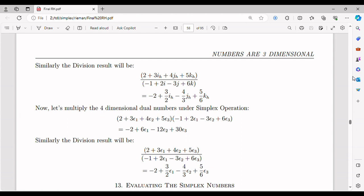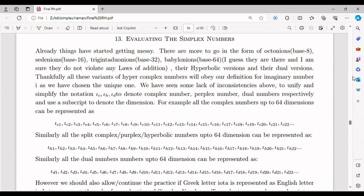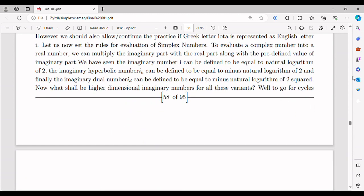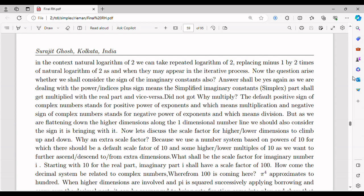Furthermore, overlooking scientific works that are not immediately understood by the scientific community can have broader societal implications. Scientific research often addresses pressing societal challenges such as climate change, disease prevention, or technological advancements. By disregarding unconventional ideas, we may miss out on potential solutions to these complex problems.